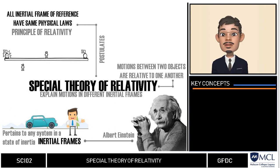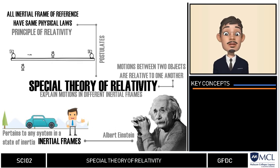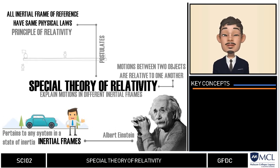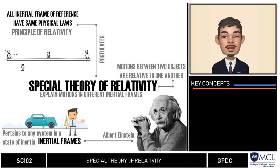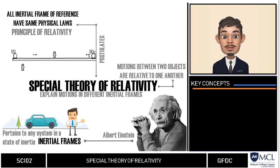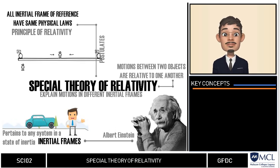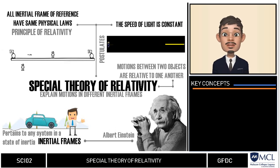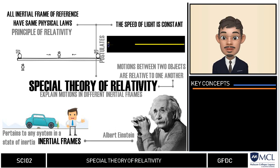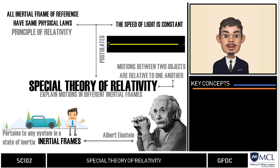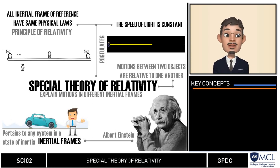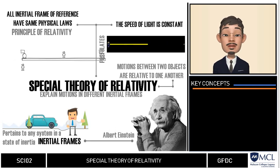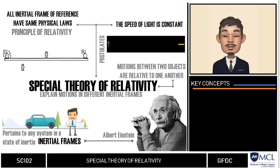Simply stated, there is no correct frame of reference when we are looking at two moving objects, and any laws of physics can be applied to all reference frames involved. Second: the speed of light in a vacuum is independent of the motion of its source and of the observer. This only says that the speed of light is always constant, which we can round off to 3 times 10 to the 8 meters per second.